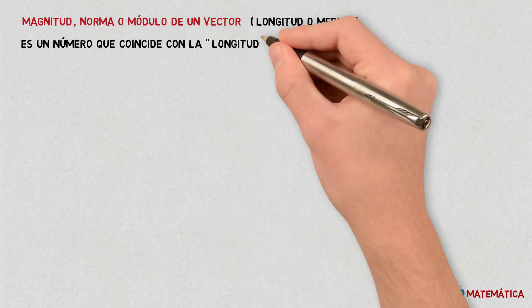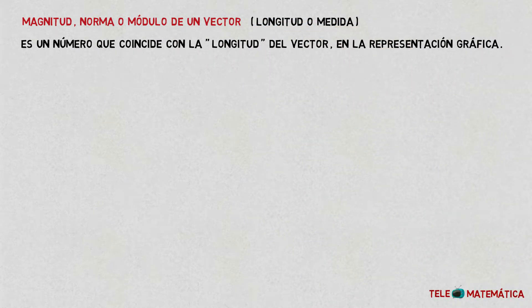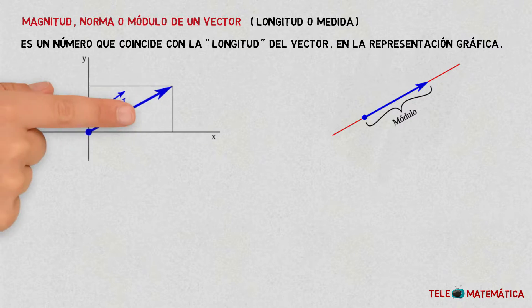It is a number that coincides with the longitude of the vector in the graphical representation. Graphically, we have a vector where on the X axis is drawn its component Vx and parallel to the Y axis or on this, the component Vy.